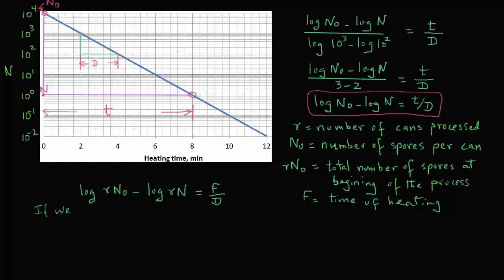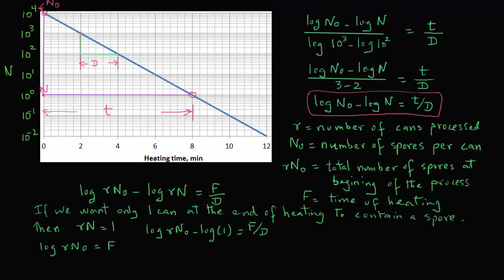Now if we want only one can at the end of the heating time to contain a spore, then we can say that r times n must be equal to 1. So we can go ahead and substitute rn is equal to 1 in this equation. And we have log rn0 minus log of 1 equals f over d. Now log of 1 is 0, so we are left with log of rn0 equals f over d. Or rn0 is equal to 10 raised to power f over d.